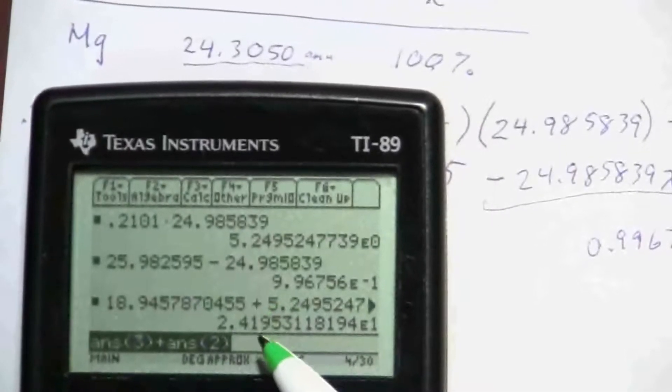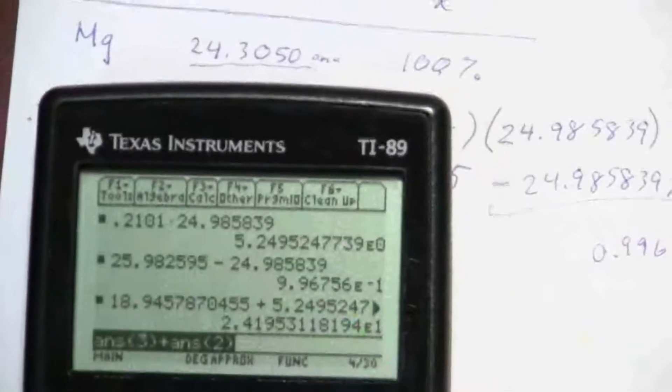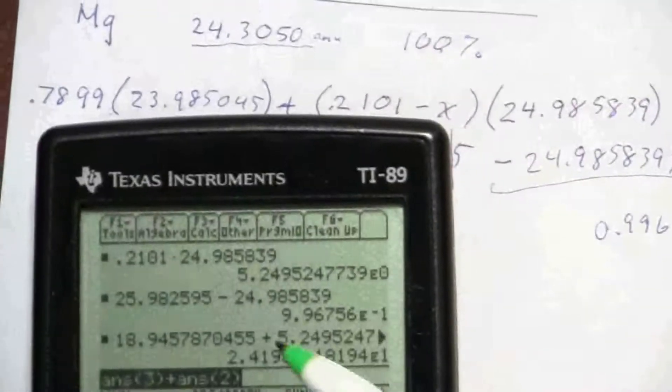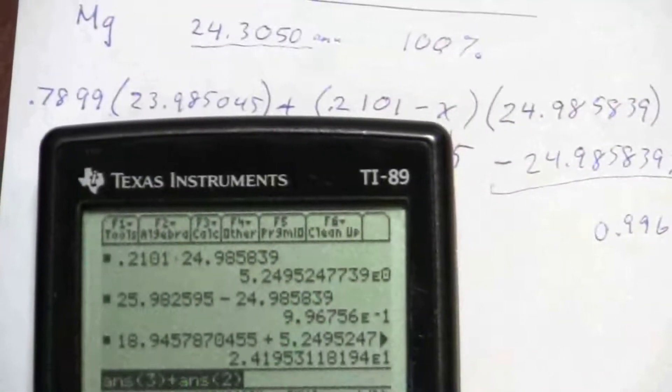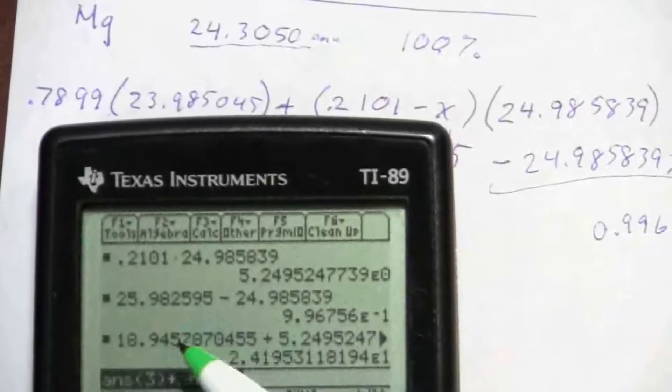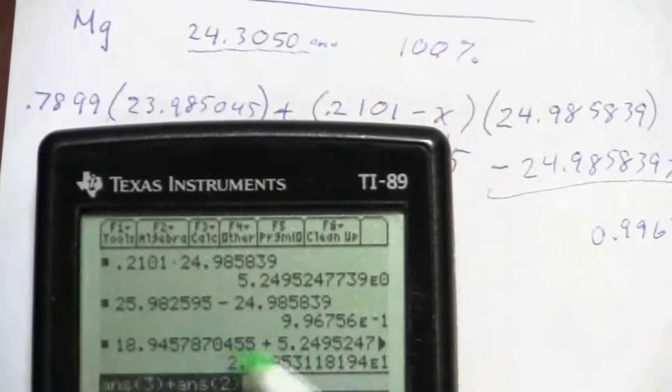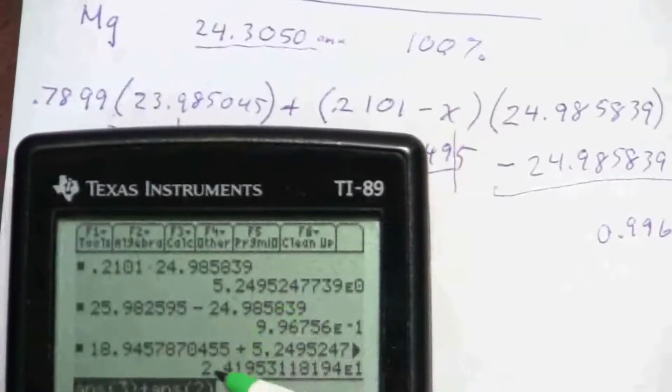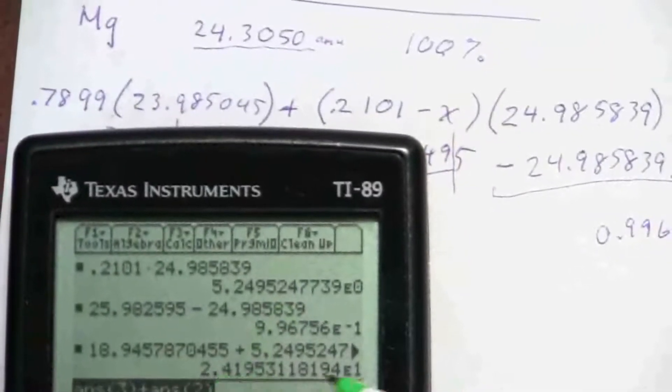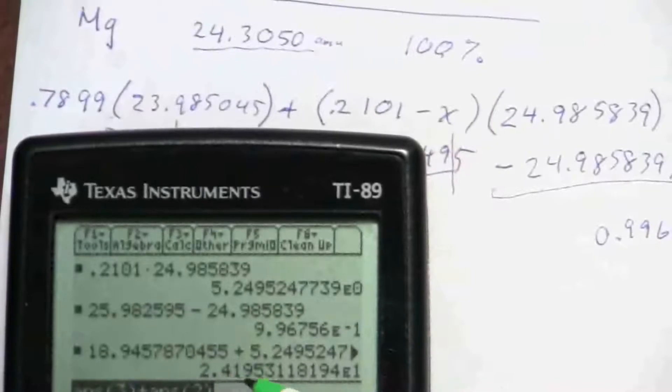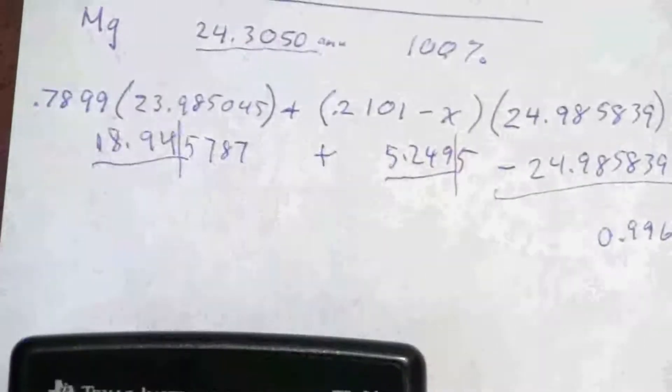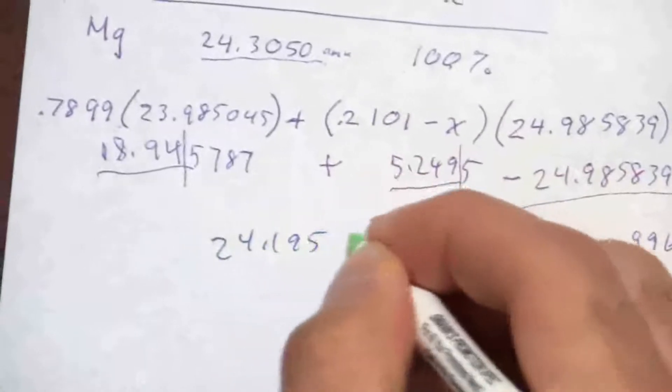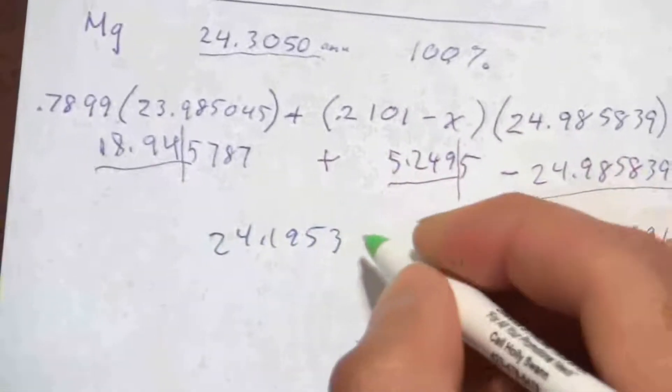And when I do that, I have times 10 to the 1, so that'll be 24.1953. And in that way, when I use the answer function in the calculator, I don't have to retype in all those numbers, and then it'll include everything, so I'm sure I don't have any rounding errors. 24.1953.